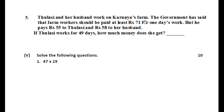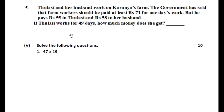Thulasi and her husband work on Karunya's farm. The government has said farm workers should be paid at least rupees 71 for one day's work, but he pays rupees 55 to Thulasi and rupees 58 to her husband. Thulasi ने 49 days work किया, तो उसे कितनी money मिली? One day के लिए 55 rupees मिलते हैं, तो 49 में 55 का multiply कर दीजिए. यहाँ आपको सिर्फ answer लिखना है.